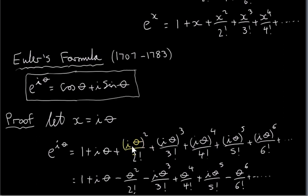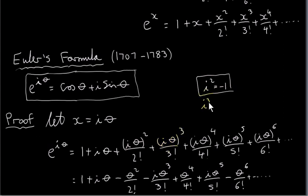Now let's calculate some of these powers of i. i squared is minus 1 — that's the basic fact about i. What about i cubed? We can write i cubed as i squared times i. We know that i squared is minus 1, so i cubed is minus 1 times i, which is minus i.